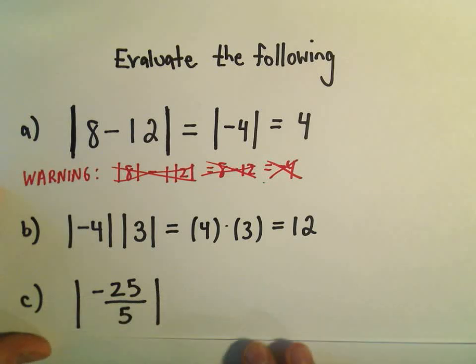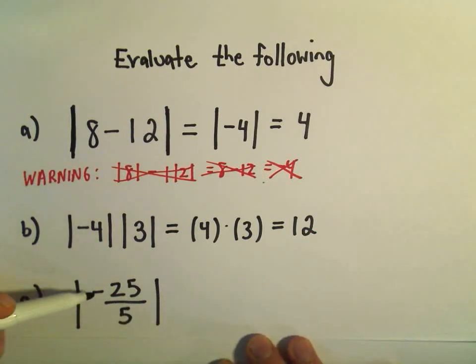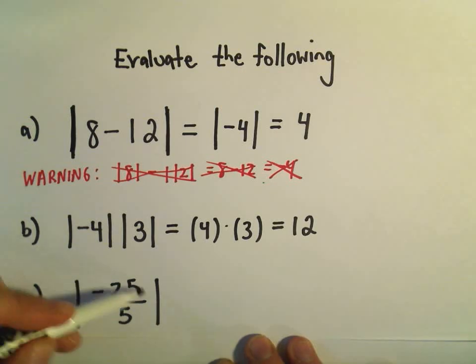And in the last one here, the same thing. We have the absolute value of negative 25 over 5. We could simplify inside first, negative 25 over 5, and make that negative 5. And the absolute value of negative 5 is positive 5.